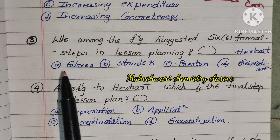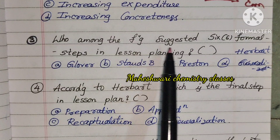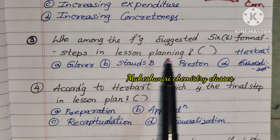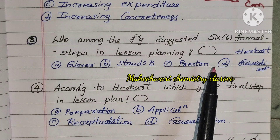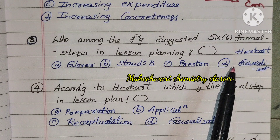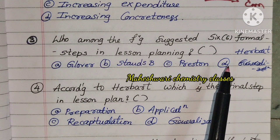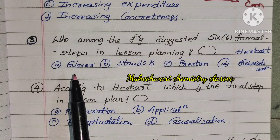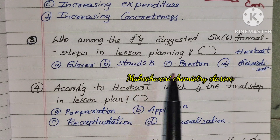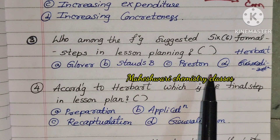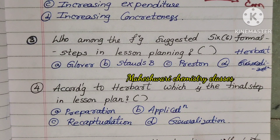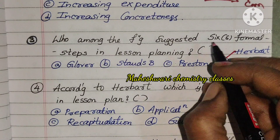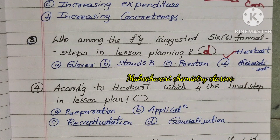Third question: Who among the following suggests six formal steps in lesson planning? The four approaches given are Glover, Stance B, Preston, and Herbert. Here it is Herbart. So D is right.